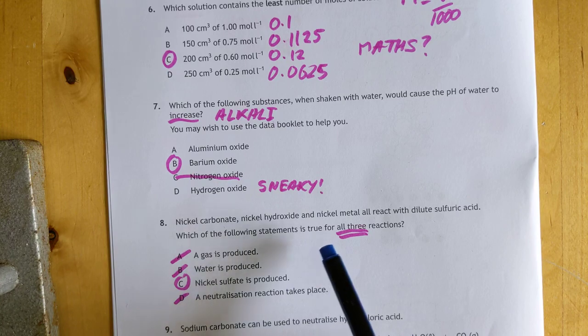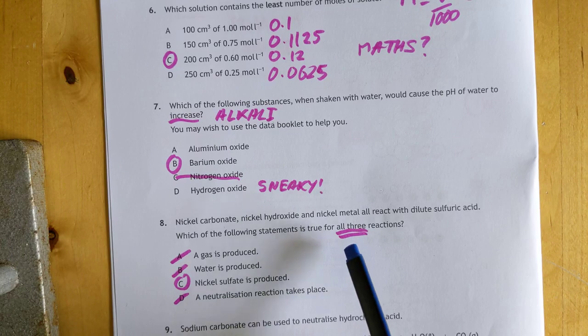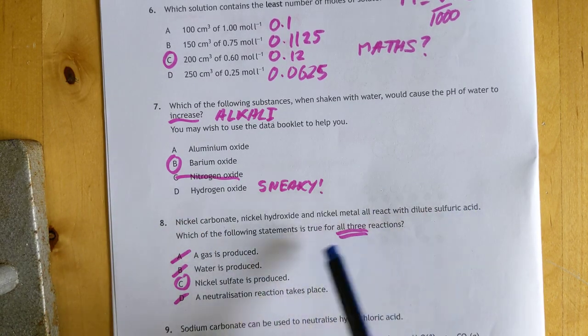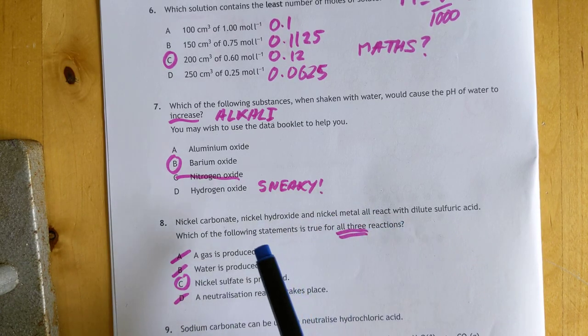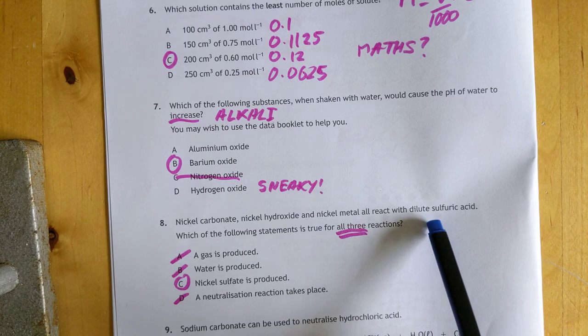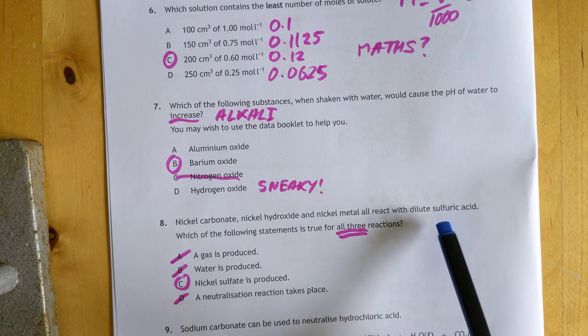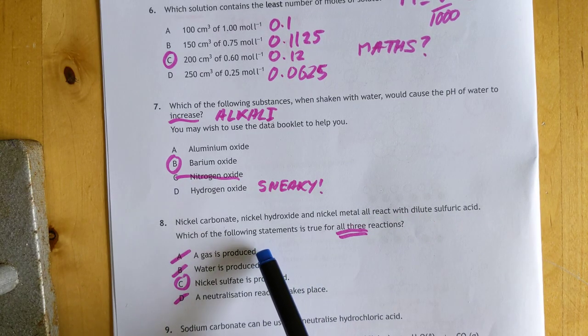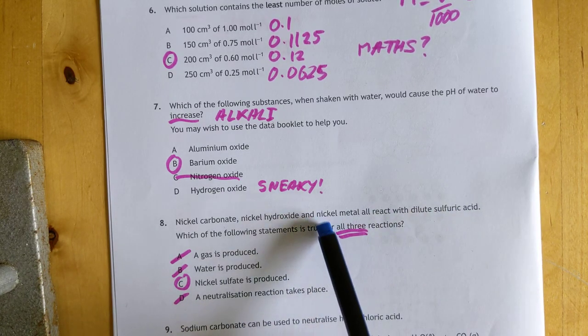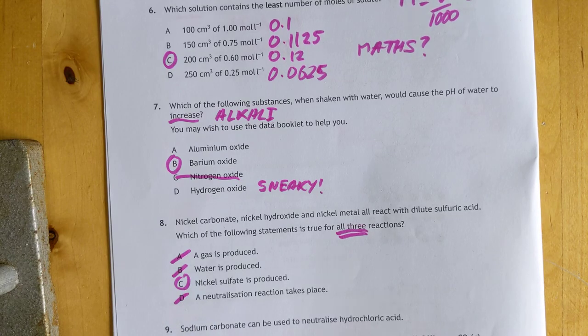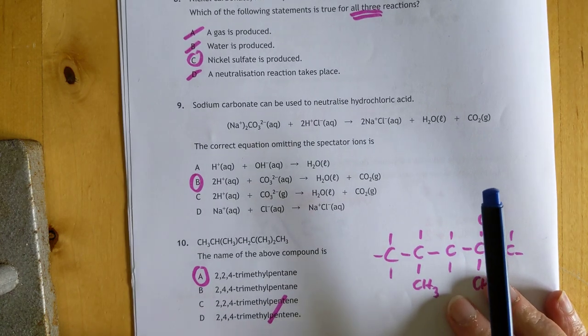Number eight: nickel carbonate, nickel hydroxide, and nickel metal all react with dilute sulfuric acid. Which statement is true for all three reactions? Metal and acid makes salt and hydrogen. Metal hydroxide and acid makes salt and water. Metal carbonate and acid makes salt, water, and CO2. Not all make a gas, not all make water, and not all are neutralization. Metal is a redox reaction. The answer is C: nickel sulfate produced in all three.